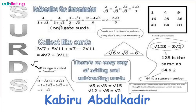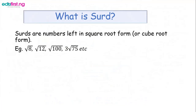The first thing is: what is a surd? Surds are numbers left in square root form, or sometimes they can be in cube root form. We have some examples here: root 8, root 12, root 100, 3 root 75, and so on.